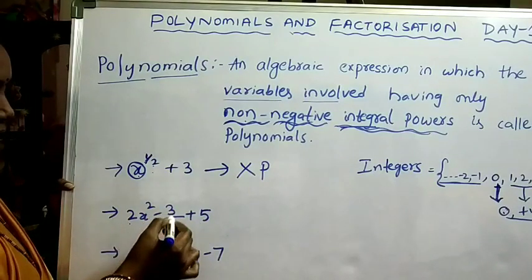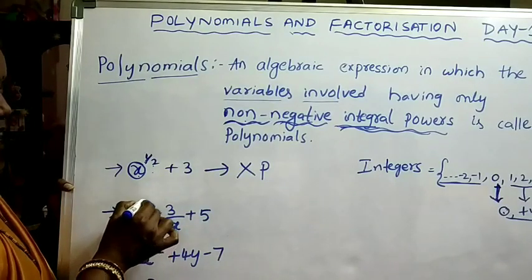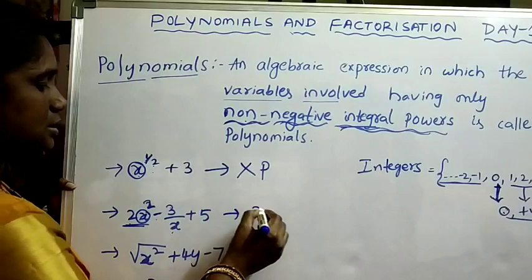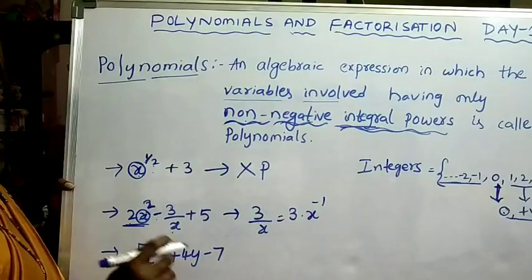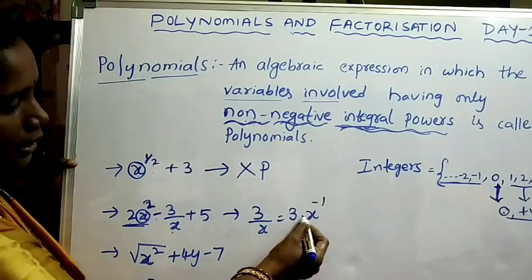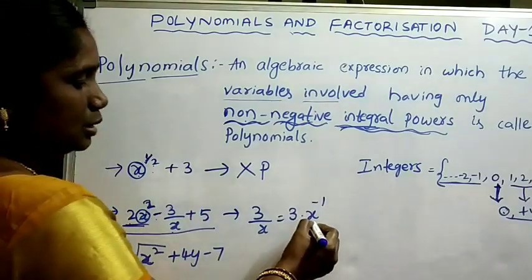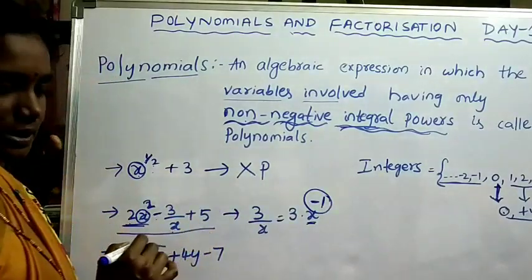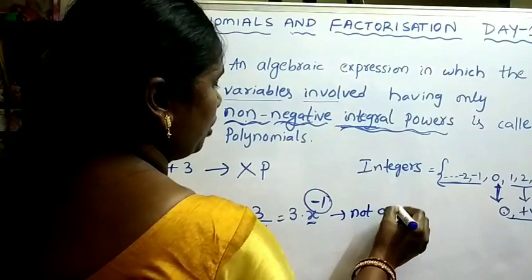Next, consider 2x² minus 3/x plus 5. In 2x², the variable x has power 2. Coming to the second term, 3/x can be written as 3 into x^(−1). From the laws of exponents — which you know from 8th class — 3/x equals 3·x^(−1). So the power of the variable is minus 1, which is a negative integer. Therefore this algebraic expression is also not a polynomial.